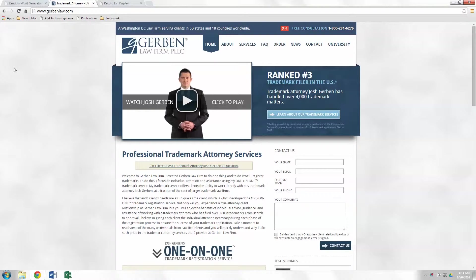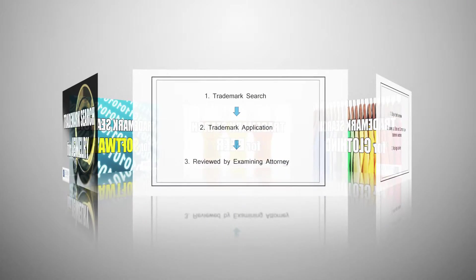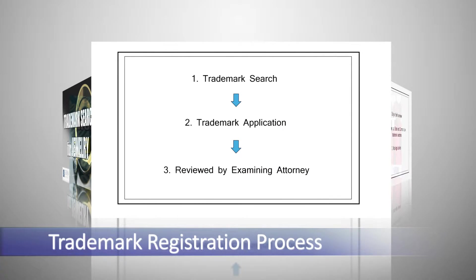Now, why do we do that? Well, to gain a better understanding, let's take a bird's-eye view of the trademark registration process as a whole. First comes the search, then the application, which is reviewed by an examining attorney with the United States Patent and Trademark Office. What this examining attorney is looking for is to make sure that your trademark would not create a likelihood of confusion — those are the buzzwords — likelihood of confusion in the marketplace with a pending or currently registered trademark. I point that out because it doesn't take an exact match of your desired trademark to justify a denial of your application.